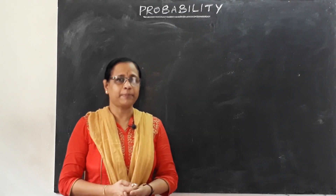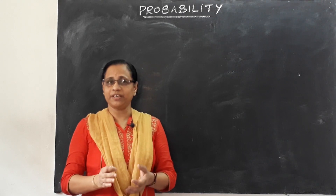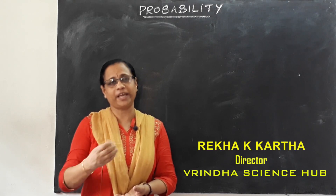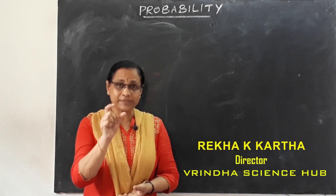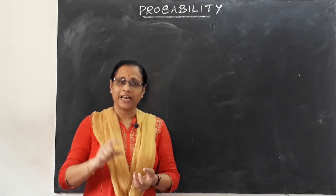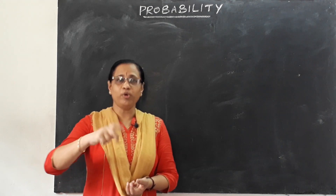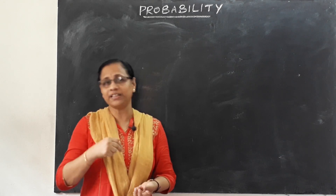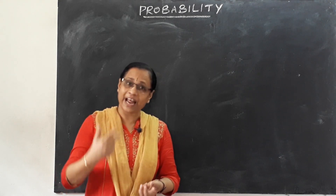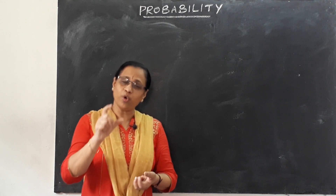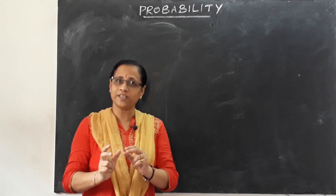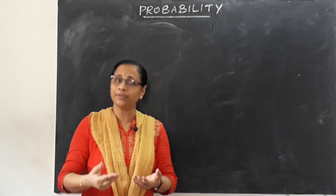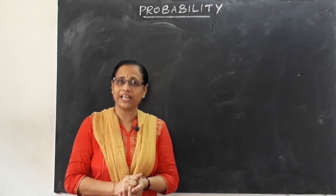Welcome to Probability in the chapter, plus two and plus one. The first topic is Random Experiment. A random experiment is one where we don't know how the result is coming. For example, a coin toss — we call it a coin toss: a head or a tail — but we don't know how the head or tail is coming. We call it a Random Experiment.